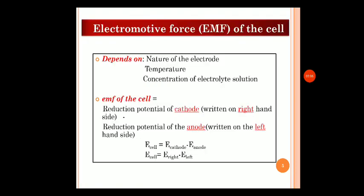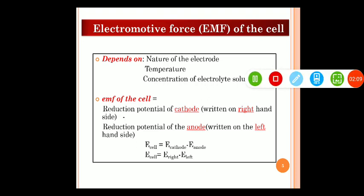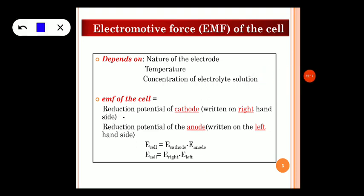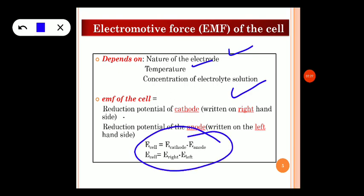Electrode potential or electromotive force depends on three important factors: the nature of the electrode, temperature, and the concentration of the electrolytic solution. EMF of the cell is expressed as E cell = E cathode − E anode, or E cell = E right − E left, because the anode is written on the left-hand side and the cathode on the right-hand side when representing a cell. EMF of the cell equals the reduction potential of the cathode minus the reduction potential of the anode.